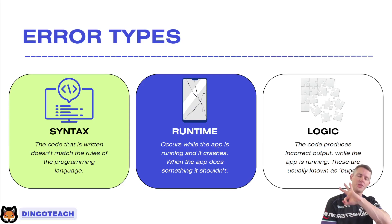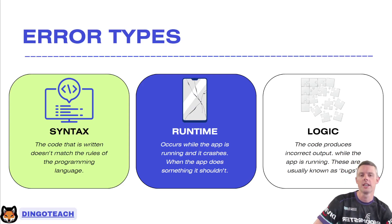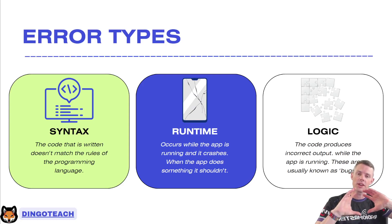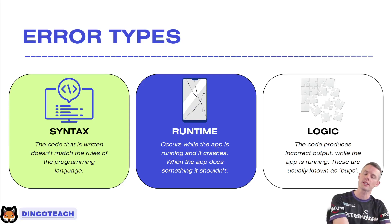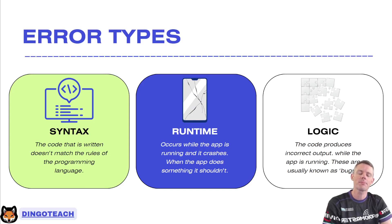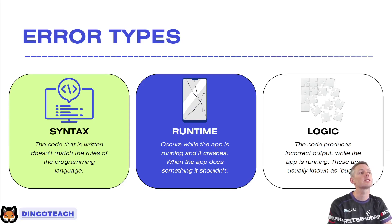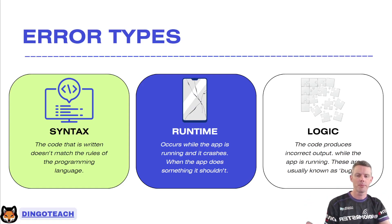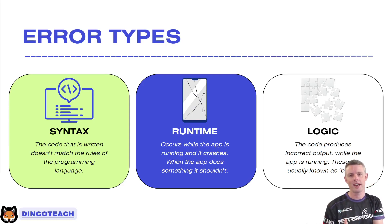There are three major types of errors. Some might argue there are more, but there are three main categories. There is a syntax error, where the code you wrote doesn't match the rules of the programming language. Like what I just did with a capital P for print — that was a syntax error. It's like saying 'dog is the red' — those are all correct words, just not in the right order. But 'the dog is red' makes a lot more sense, because the first sentence had a syntax error.